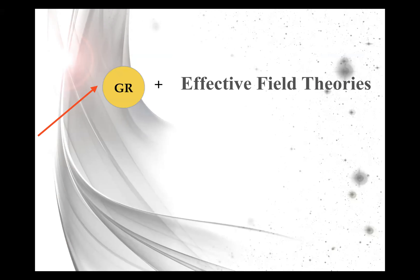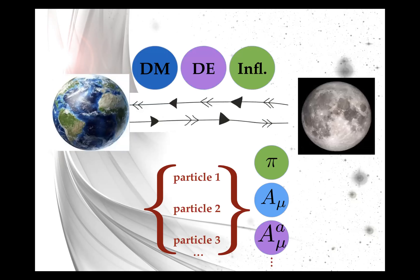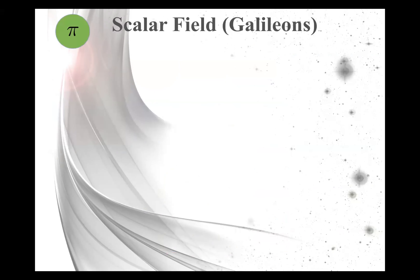In order to describe at least some of these ingredients, people tend to either consider general relativity plus some effective field theories, or even consider modified gravity — non-GR. Regardless of which perspective you come from, you always face the need to add additional degrees of freedom: additional scalar fields, vector fields, and sometimes even additional tensor fields as in bigravity-type theories. Ambitiously, one might try to explain all ingredients with just one extra field.